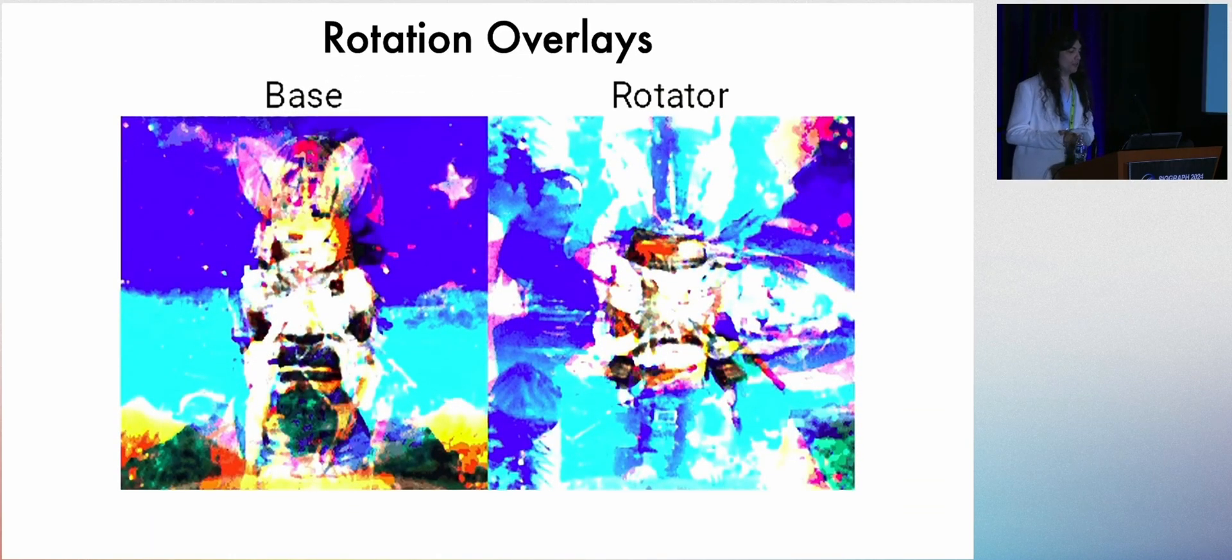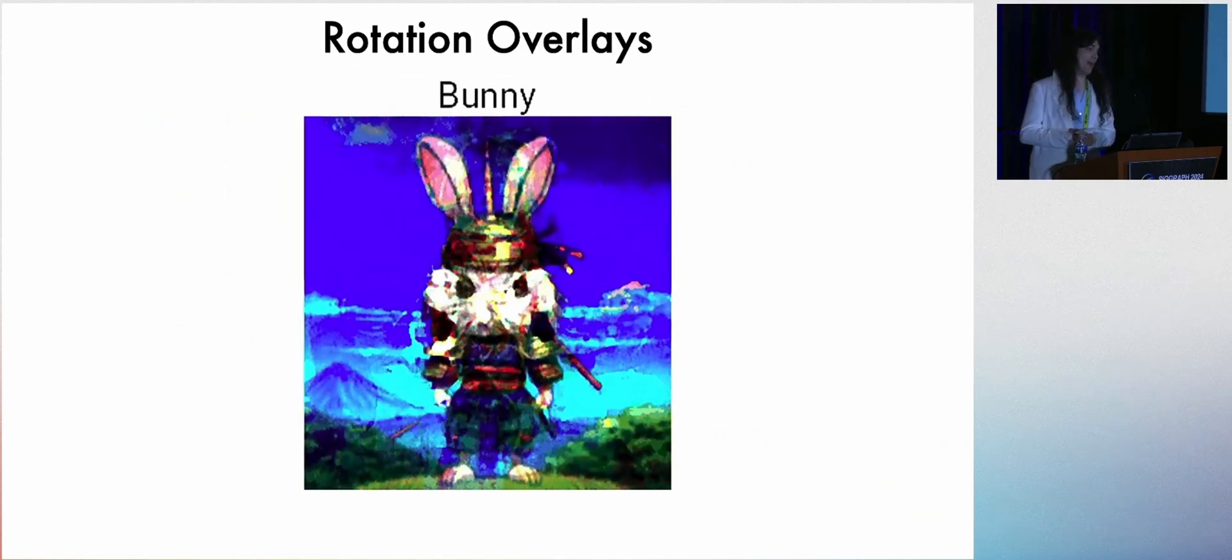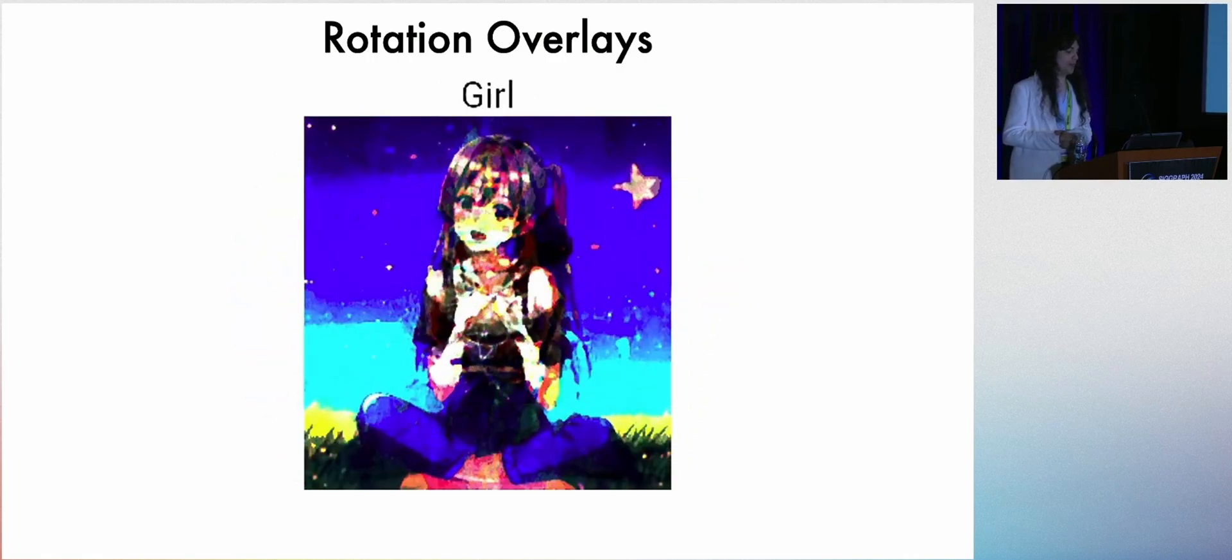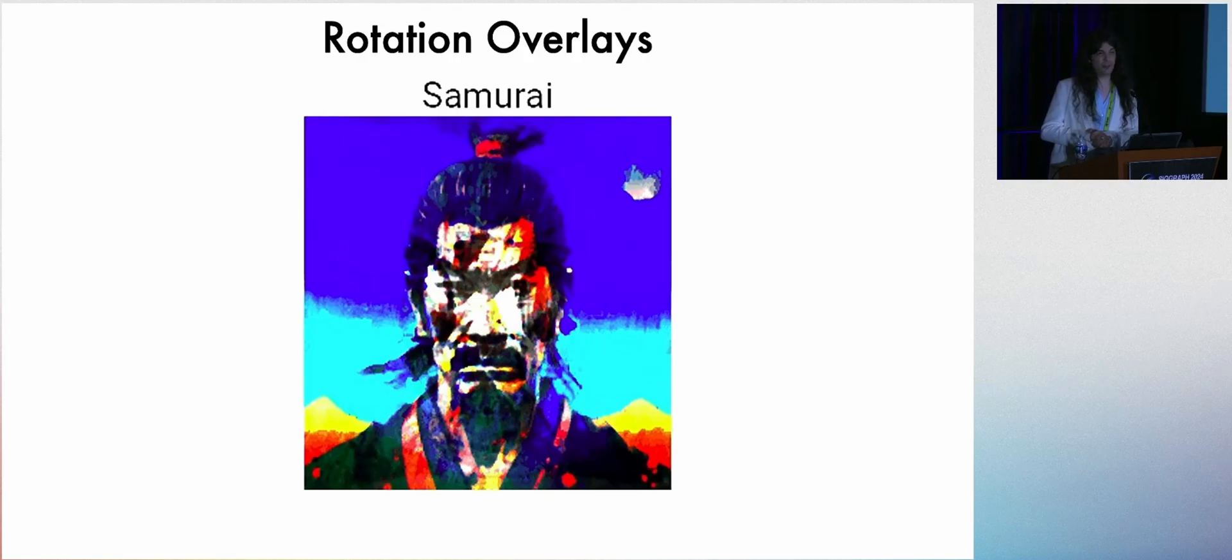And the last type is rotation overlays, where we have two transparent sheets, one of which is the base, and the other one rotates on top of it to yield four different images from two pieces of plastic.